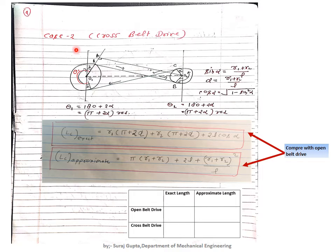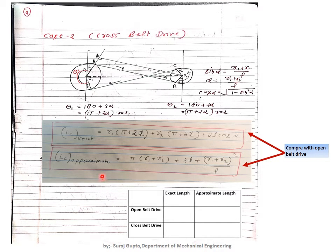Before that, let's look at the formula for cross belt drive, which is almost the same as open belt drive. There is only one difference: in open belt drive it is minus, and in the case of cross belt drive it is plus — both in the exact and approximate length formulas. So the length in the cross belt drive is greater than in the open belt drive.